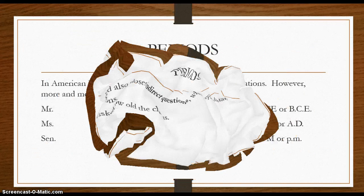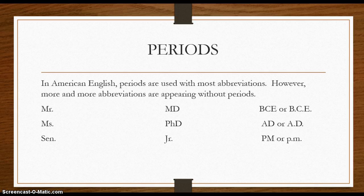Periods in American English are often used with abbreviations — for example, Mr., Mrs., Junior, Senator. But a lot of times in more modern English, you see many more abbreviations appearing without periods. MD almost always used to appear with periods, but not so much anymore. PhD is the same. Some can go either way: BCE can be typed with or without periods, and so can AM, PM, and AD.